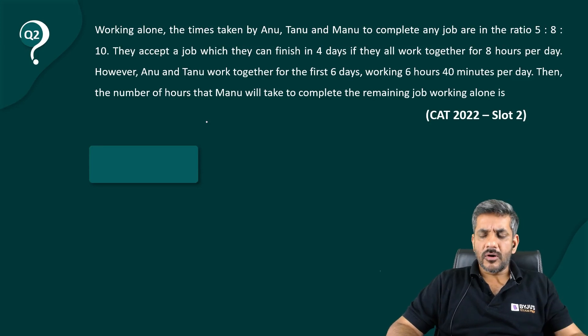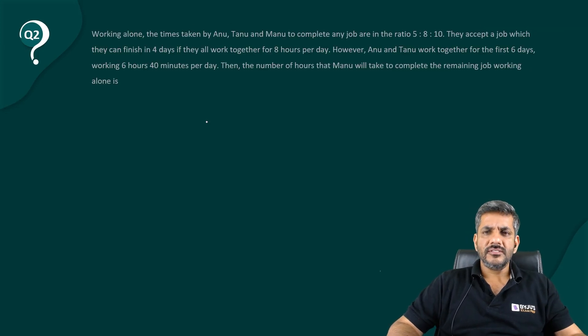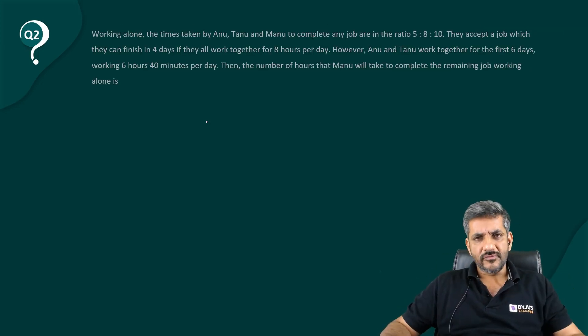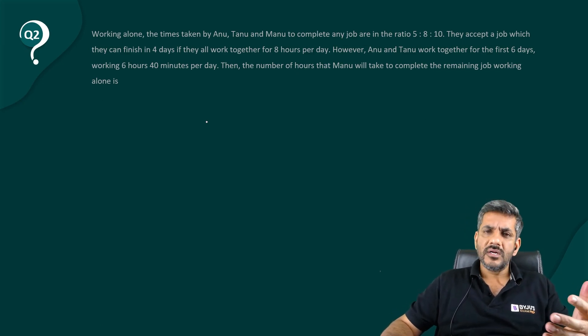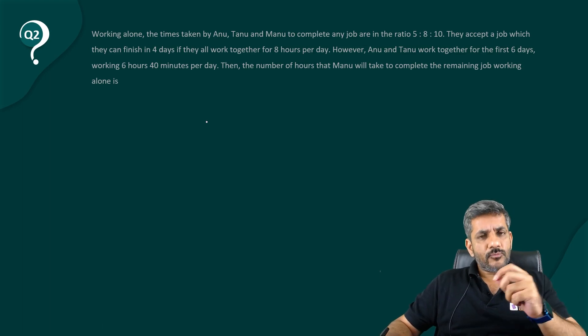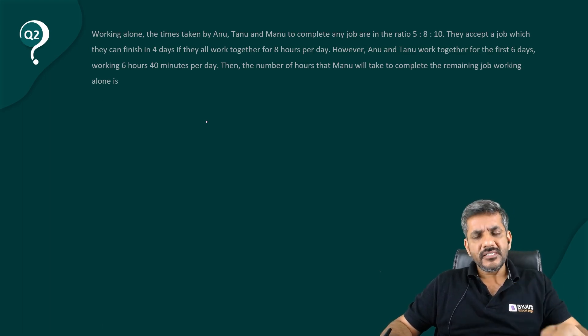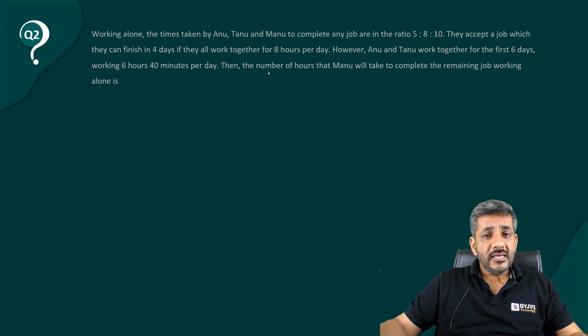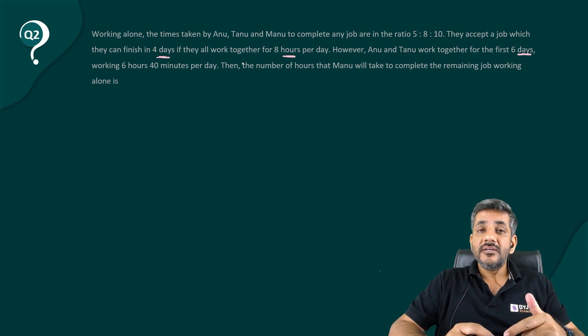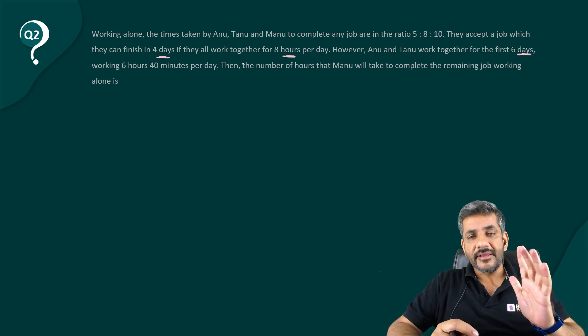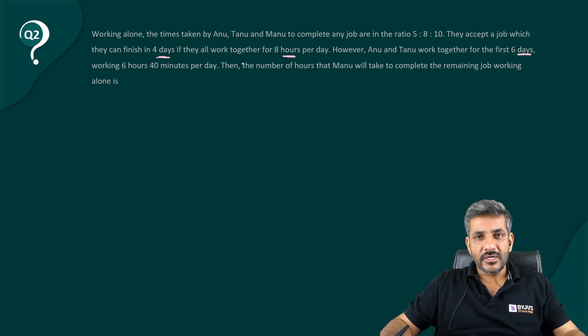Now, as we are discussing the aptitude solution for these questions, what are the things to be taken care of? This is a non-MCQ, so we do not have any options. The point is, in aptitude, the first thing you look for is that the smallest unit of time must be taken in such questions. For example, here he is talking about days and hours per day. So, it is better to move in terms of hours rather than days because that is the smallest unit of time.